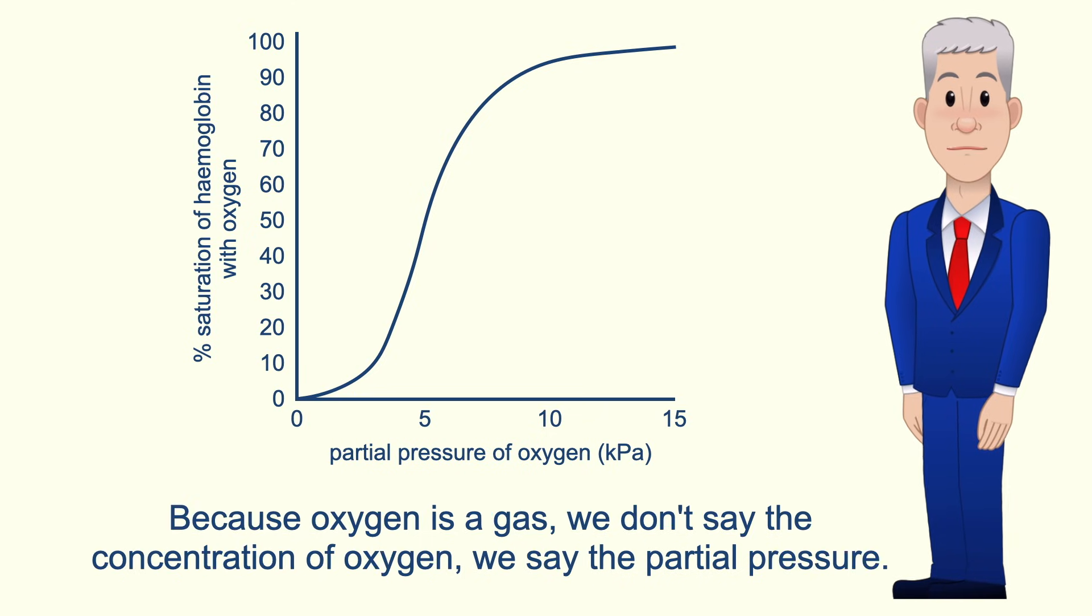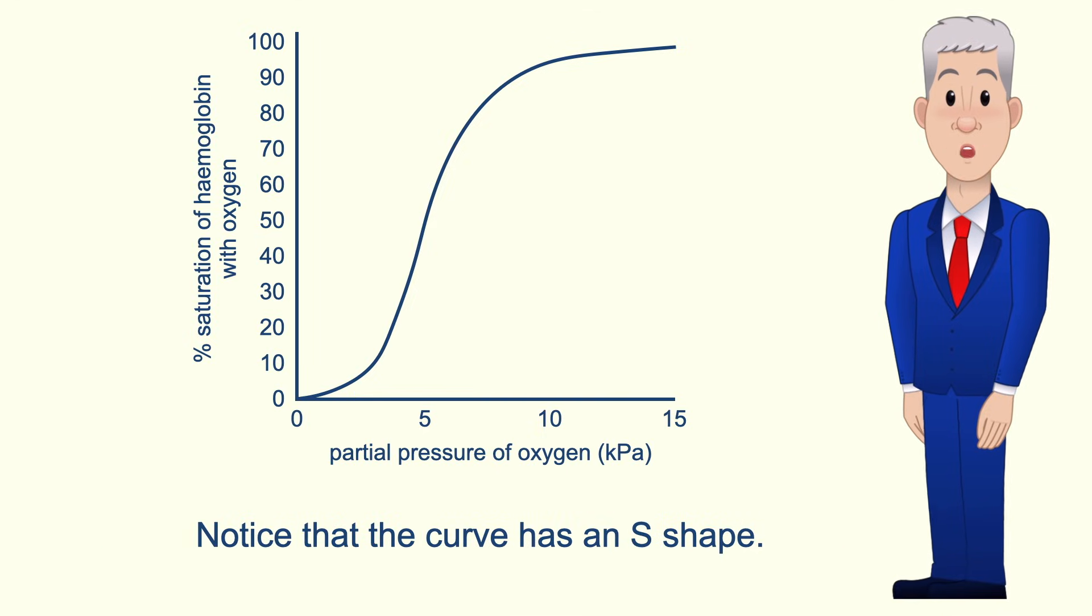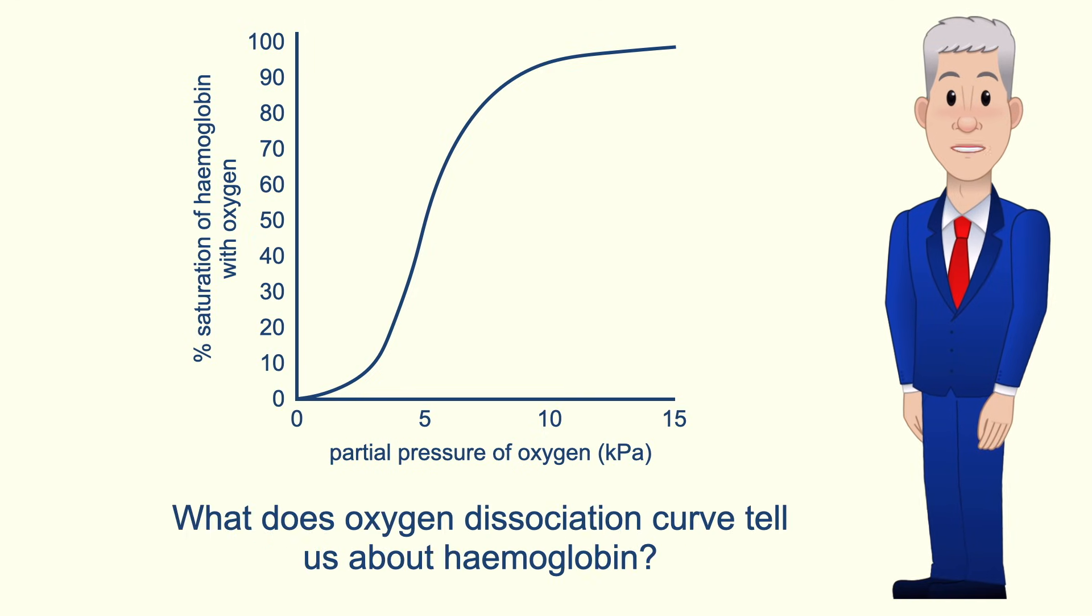Because oxygen is a gas we don't say the concentration of oxygen, we say the partial pressure. Notice that the curve has an S shape—this is called a sigmoid curve. So what does the oxygen dissociation curve tell us about haemoglobin?